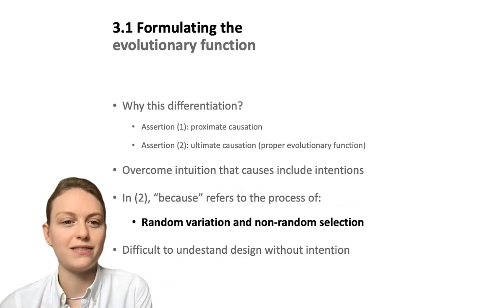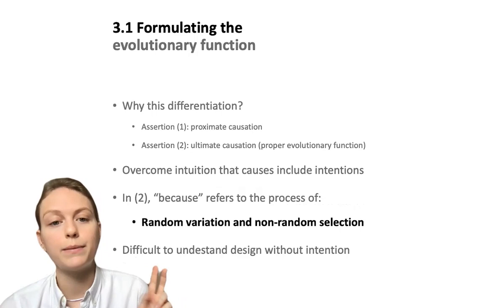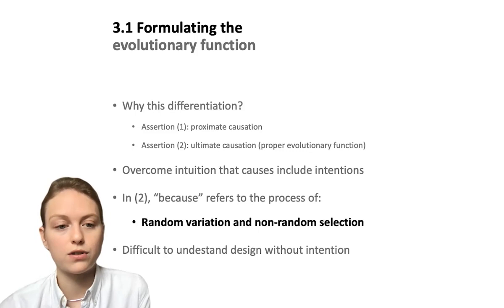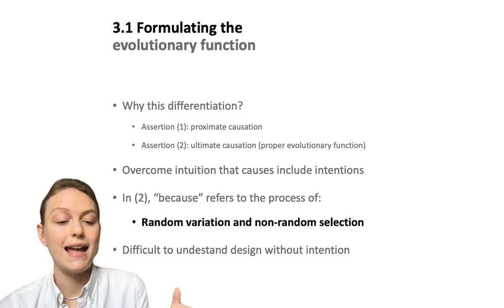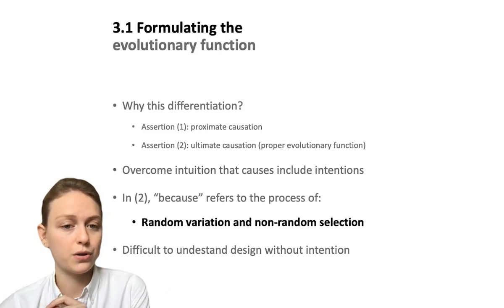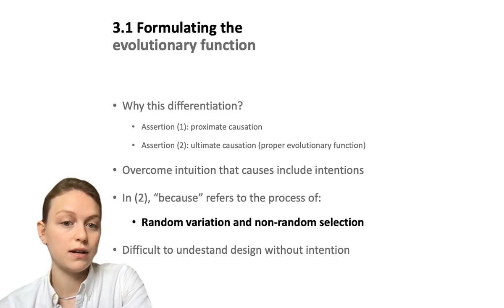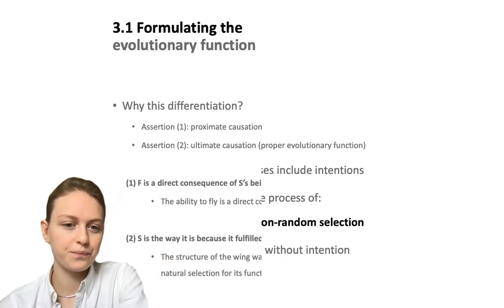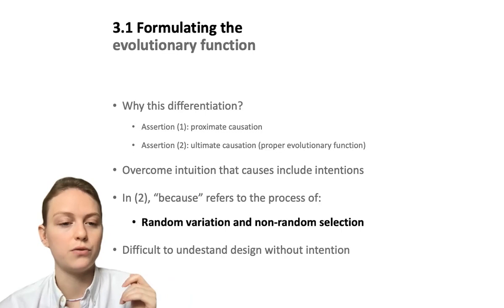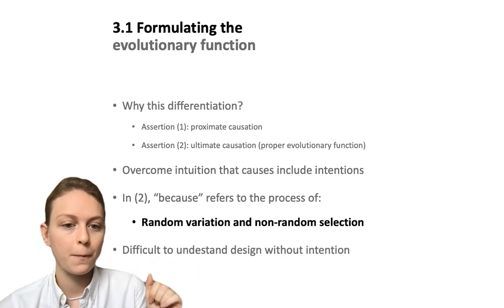Why is this differentiation important? Because in assertion one we are talking about proximate causation, and in assertion two we're talking about ultimate causation — also called the proper evolutionary function in biology. This differentiation is very important to overcome the intuition that causes include intentions, i.e., trying to find teleological explanations. It is also important to note that in assertion two, the 'because' in 'S is the way it is because it fulfilled F' refers to the process of random variation and non-random selection — not as something with a specific goal in mind, but as this process of random variation and non-random selection. This distinction is especially important for us human beings because it is difficult for us to understand design without intention.